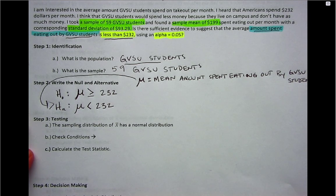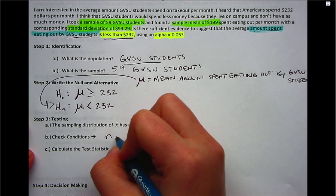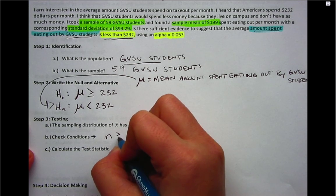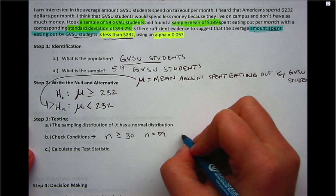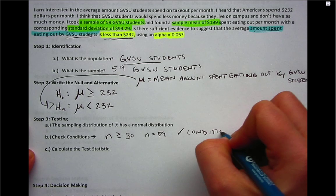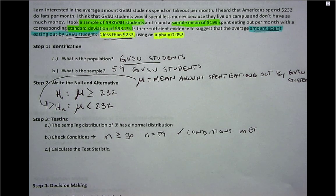So here we're going to have the assumption that the sampling distribution of x-bar has a normal distribution. To check that, we're going to see if our sample size is large enough, so we have n greater than or equal to 30. N is equal to 59, so we'll say our conditions are met. As I've said in videos past, I'll say it now: when you check conditions, there are a variety of things to consider, including the number of outliers or whether or not outliers are present. Here, because we have a large sample size, meaning that it's greater than or equal to 30, I'm going to say that conditions are met.